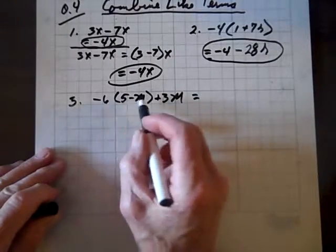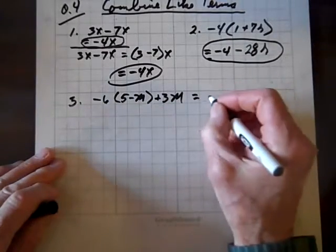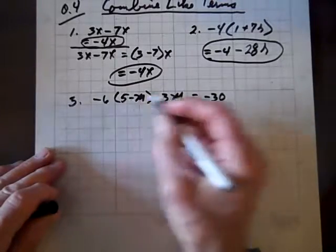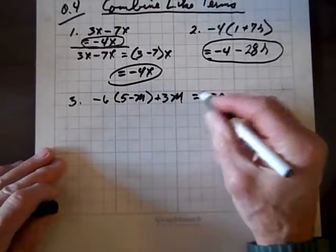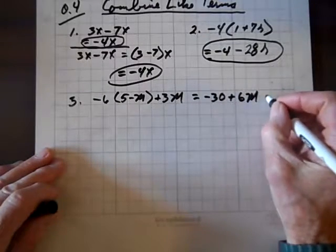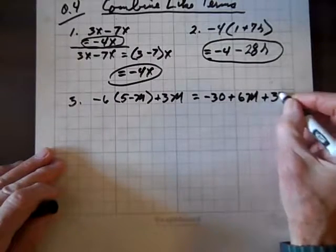But we can multiply each term by negative 6, so negative 6 times 5 is negative 30, negative times a negative is positive, so 6 times m is 6m, plus, and we have our friend 3m there.